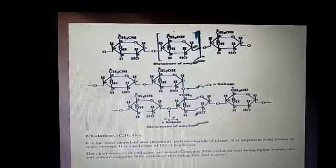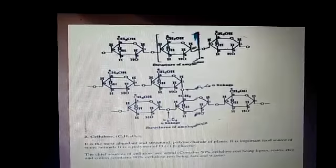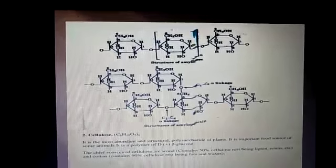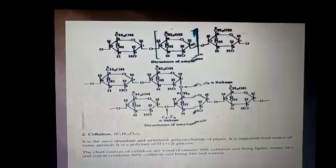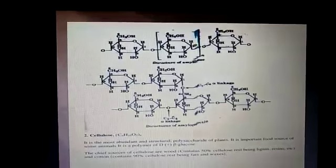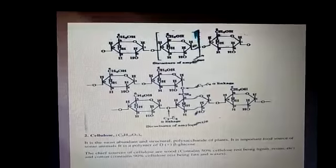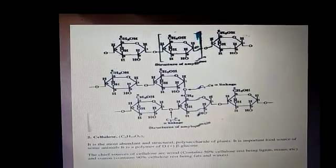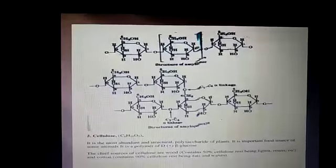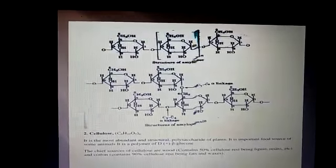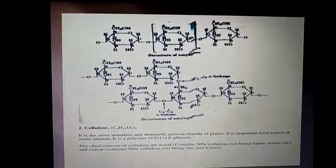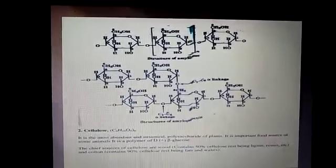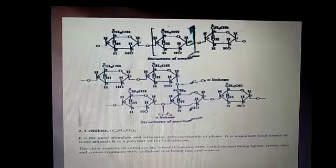In case of cellulose, it occurs exclusively in plants and is the most abundant organic substance in the plant kingdom. It is the predominant constituent of the cell wall of the plant cell. Cellulose is a straight-chain polysaccharide composed only of beta-D-glucose units, joined by glycoside linkage between C1 of one glucose unit and C4 of the next glucose unit.